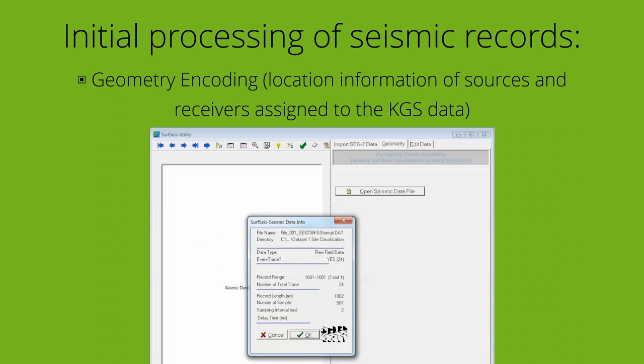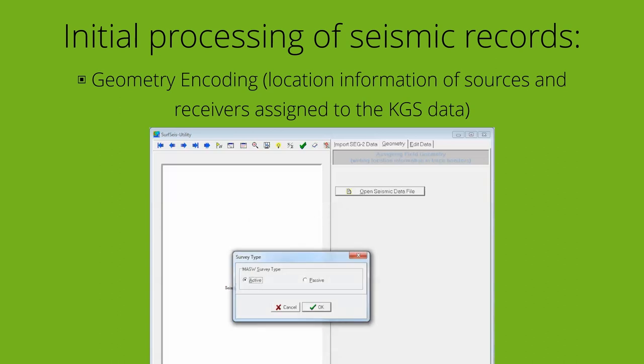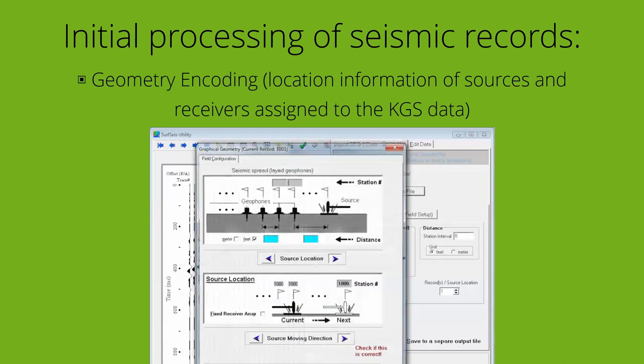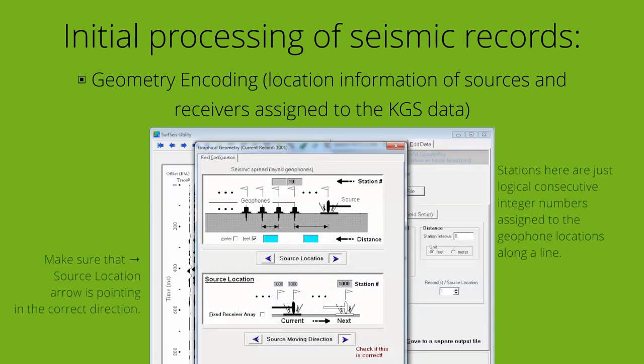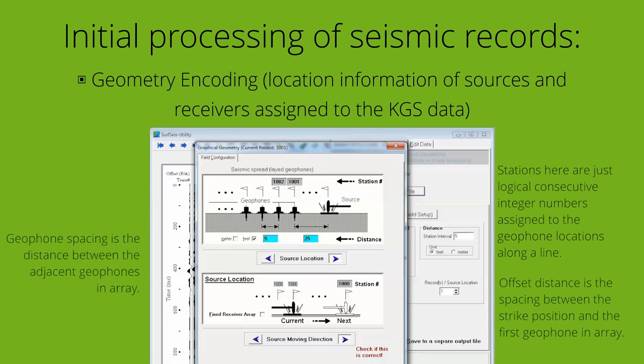After the conversion into KGS format, the program collects information about the nature of the survey — active or passive method of data acquisition — and the setup of the survey station number, offset distance, and geophone spacing.